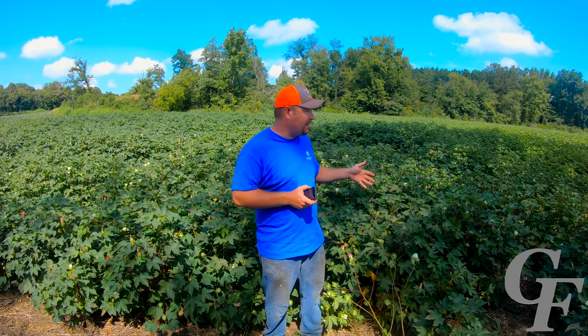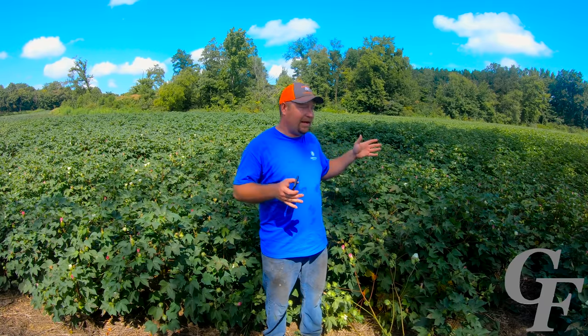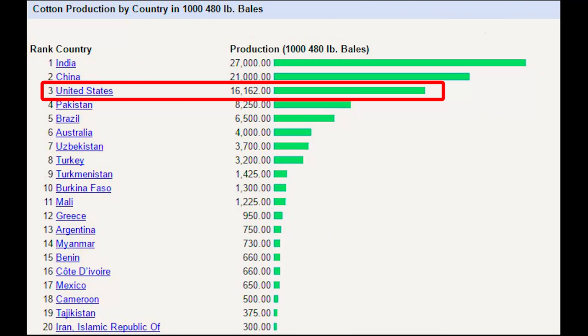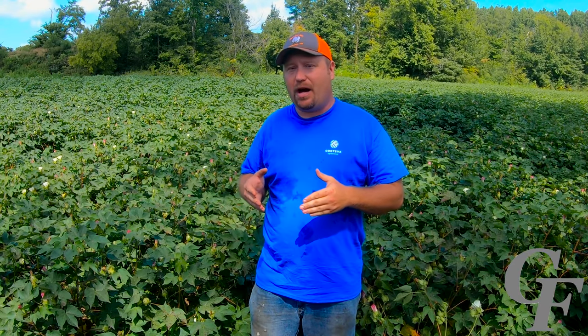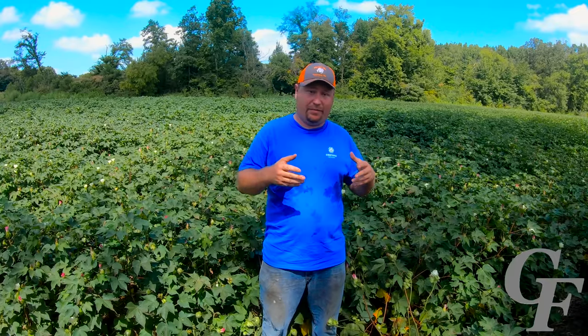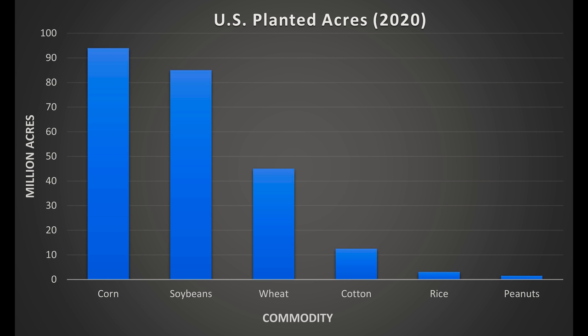First, before we get into how a cotton plant develops, I thought I'd give you a few interesting facts about cotton. Cotton is grown in many countries around the globe. The US actually produces the third most cotton of any country in the world — we're behind India and China. Total cotton production last year in 2020, US cotton producers produced approximately 15 million bales off of 12 million acres. This compares to corn, which is grown on about 90 to 93 million acres in the US.